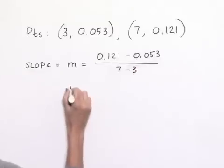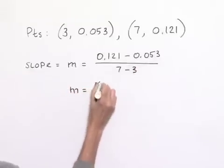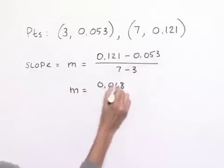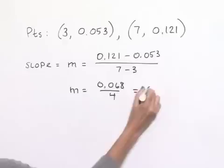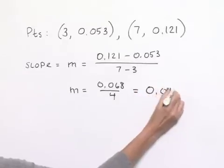This gives us a value for m of 0.068 divided by 4, which is equivalent to 0.017.